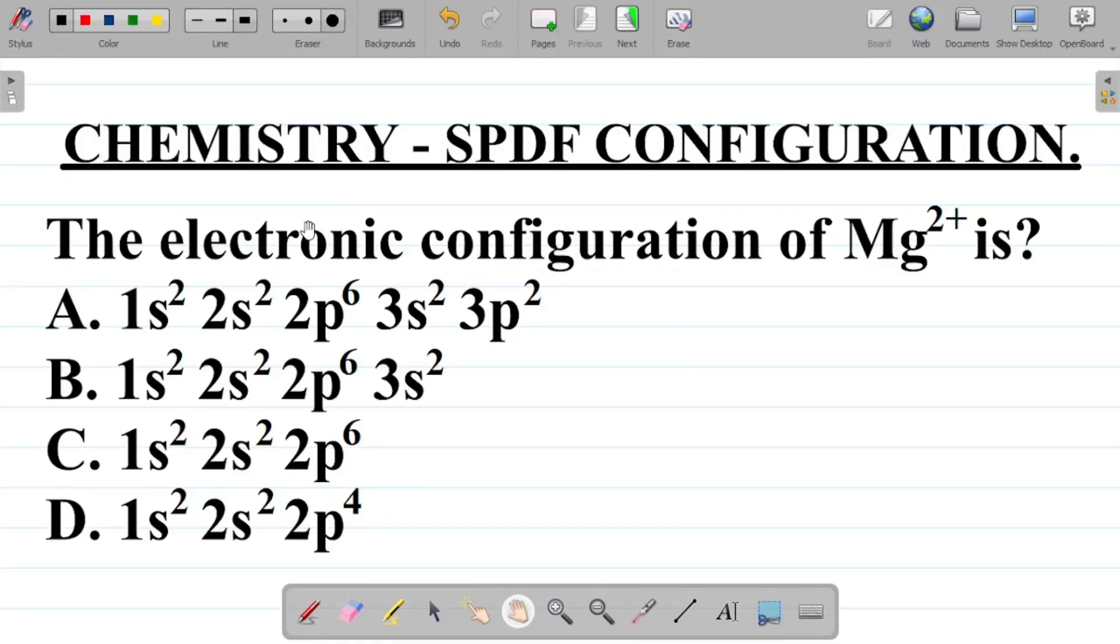Let's look at this inorganic chemistry question on SPDF configuration. The question here says, the electronic configuration of magnesium ion, that's Mg²⁺ is, so you have your options here, option A, B, C, D.